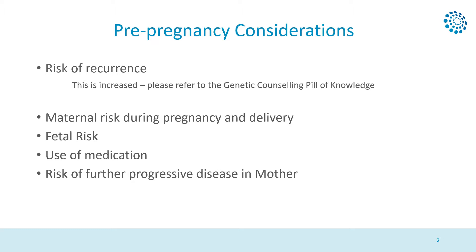This is discussed in more detail in a separate Pill of Knowledge video on genetic counselling. The next consideration is the risk of an aortic event for both the mother during pregnancy and during the delivery. The third aspect is the risks for the fetus. The fourth aspect is the risks associated with medications that may be used during pregnancy. The final consideration is the risk of further progressive disease in the mother.